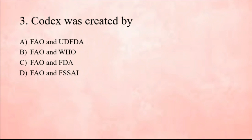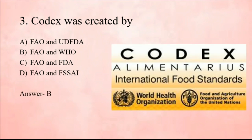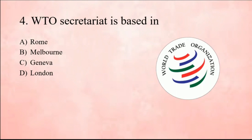Next question: Codex was created by — Codex is a collection of international standards, guidelines, and codes of practice to protect the health of consumers and ensure that fair practices are followed in food trade. It was established in 1963 jointly by WHO and FAO. FAO is Food and Agriculture Organization and WHO stands for World Health Organization.